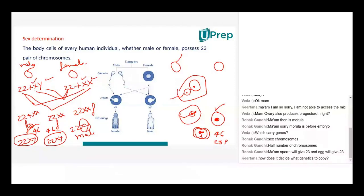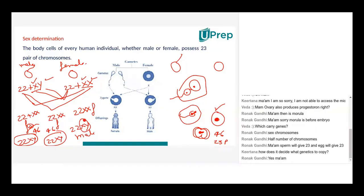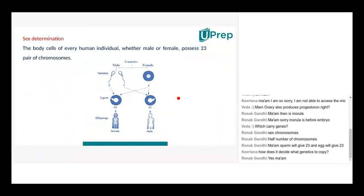The sperm gives 23 and the egg gives 23 — as in 22 plus the sex chromosome each. Which combination is selected is determined during DNA copying. How it decides is the subject of genetics — a huge and very interesting science with pages written on it, far beyond our current level.